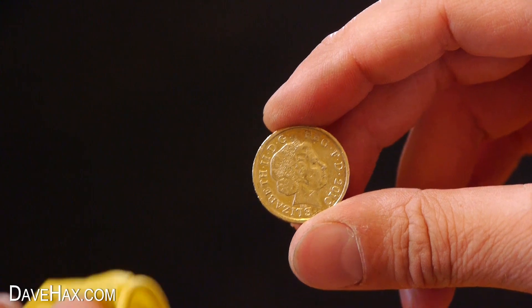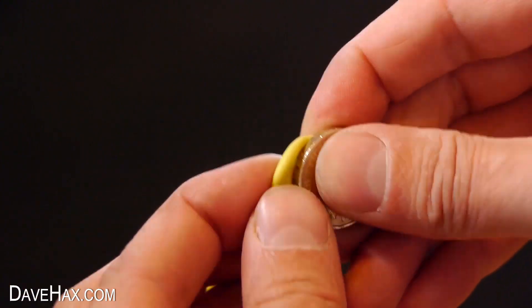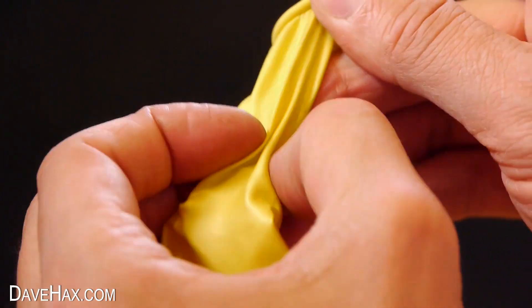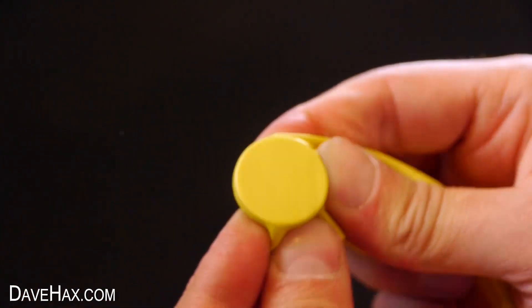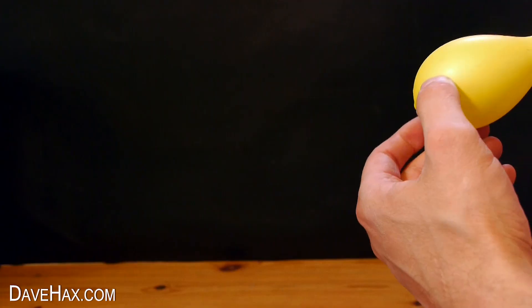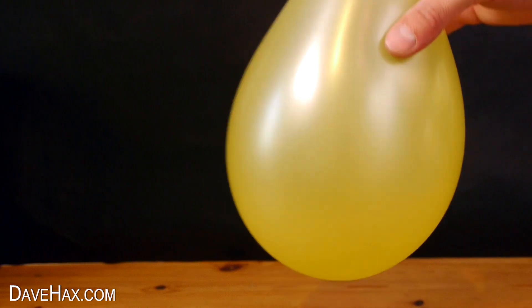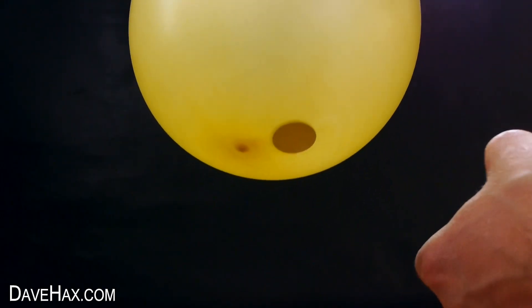For this trick I'm putting a round metal coin inside a balloon like this. Then inflate the balloon and tie it off. You can see the coin is sat at the bottom.